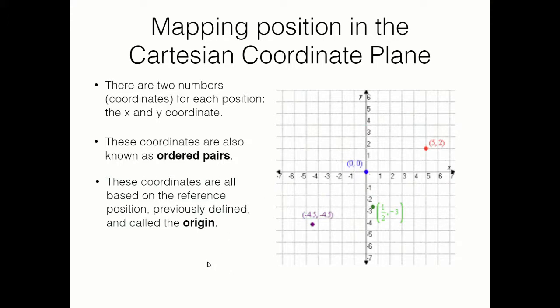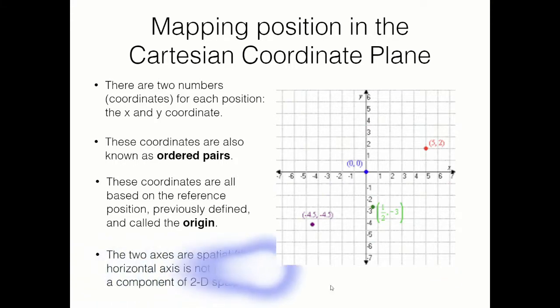A very special point is (0, 0) — zero on the x and zero on the y — that would be the origin, the two-dimensional reference point. These axes are both spatial. In the previous chapter, what looked like two-dimensional graphing actually had one dimension as time and the other as position in your one-dimensional world. This graph has no time information at all — it's just two-dimensional position.